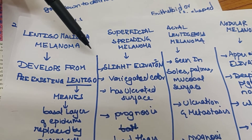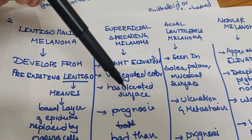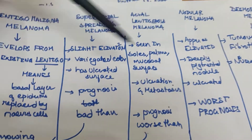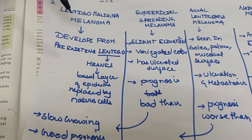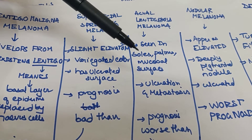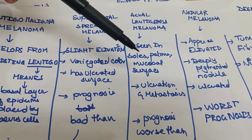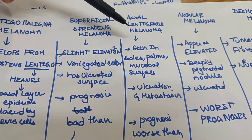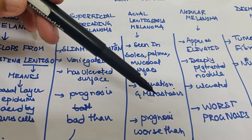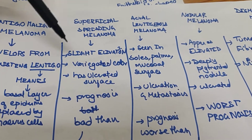Superficial spreading melanoma shows slight elevation of the tumor, is of variegated color, has an ulcerated surface, and has a good prognosis — though worse than lentigo malignant melanoma. Acral lentiginous melanoma is seen mainly on soles, palms, and mucosal surfaces. It shows ulceration and metastasis, and its prognosis is worse than both superficial spreading melanoma and lentigo malignant melanoma.